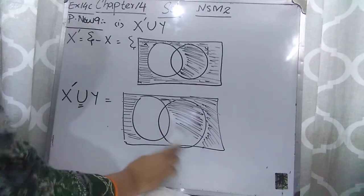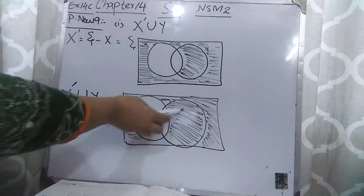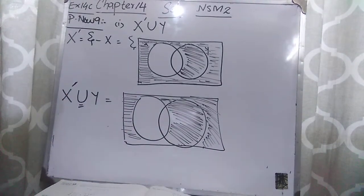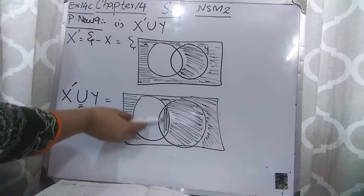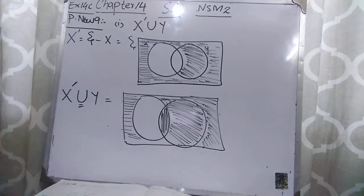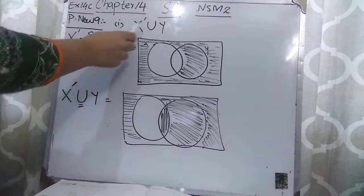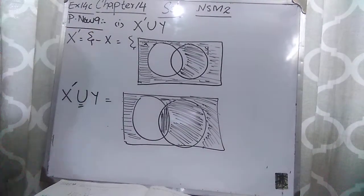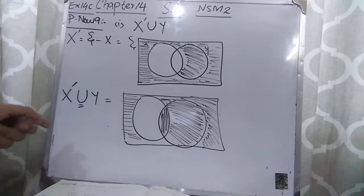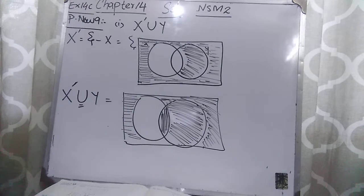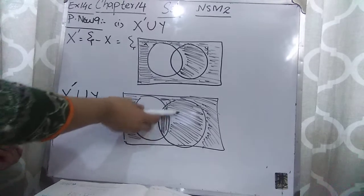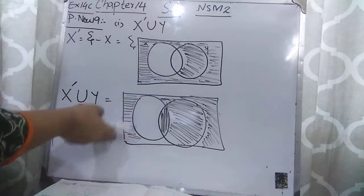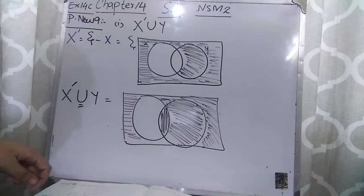This is X complement. Now for union Y — Y is already mostly shaded, so you shade this remaining part of Y as well. This is the answer for part one: X complement union Y. You first found X complement as the shaded area, then found X complement union Y by shading all the area that includes Y also. This all shows the answer of X complement union Y. I hope part one is clear.